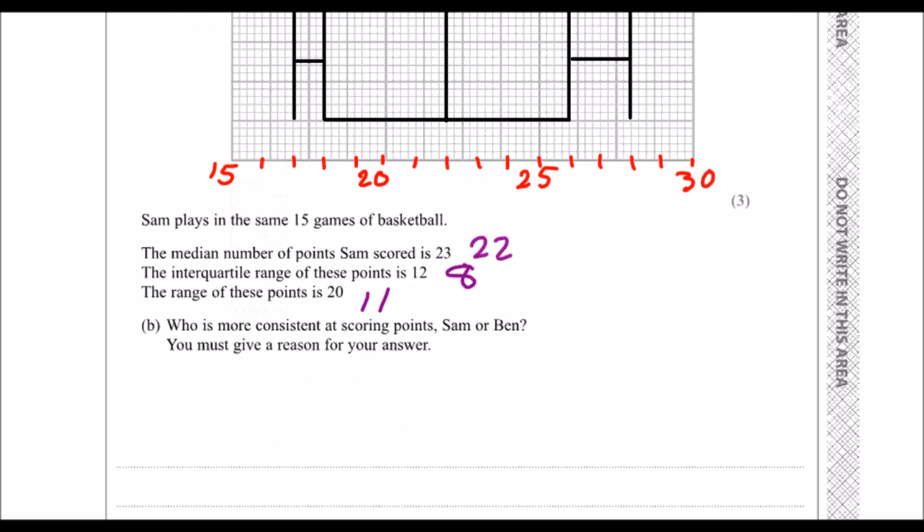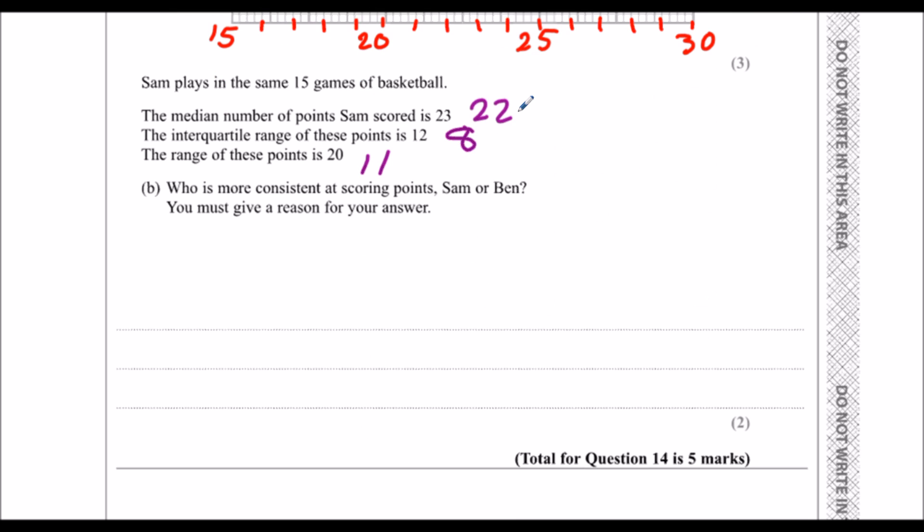So who is more consistent at scoring points? So their medians are roughly the same. We've got 22 and 23. So their middle score is roughly the same. But the spread is less for Ben. Sam's results are more spread out. So we could say that Ben is more consistent because Sam's results are more spread out.